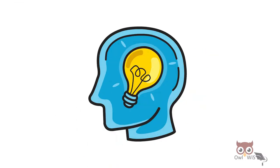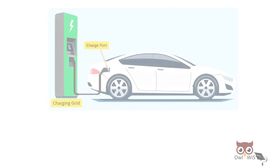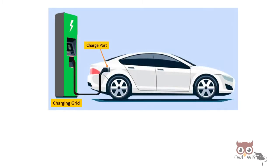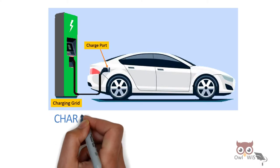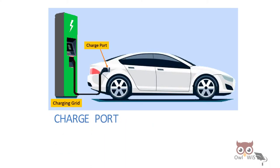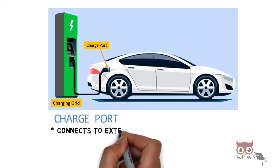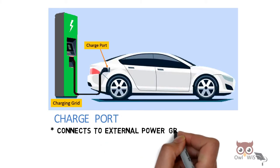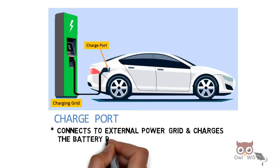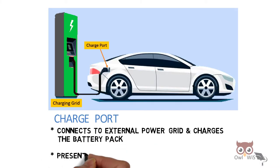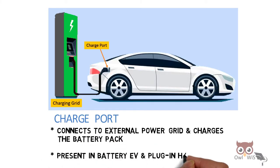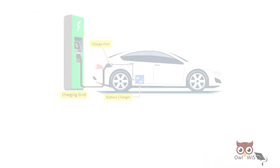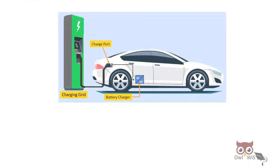Let us start with the charge port. There is a charging grid which provides power. The charge port is the one that connects to the external power grid and charges the battery pack. It is present in battery electric vehicles and plug-in hybrid electric vehicles.